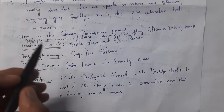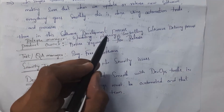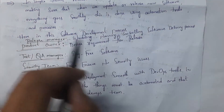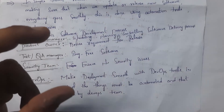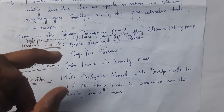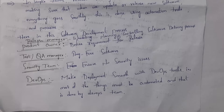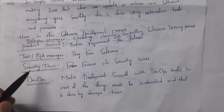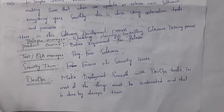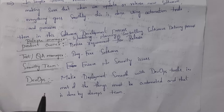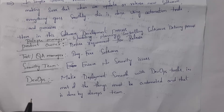In the software development process, the release manager performs scheduling, planning, and controlling — deciding when to start and how to complete the software. The product owner defines what kind of software the user wants and what features must be present. The testing manager is responsible for testing the software to make it bug-free, and the security team provides security to that software. Finally, the DevOps team automates the entire work using various tools, from writing code to placing the software in the production server.